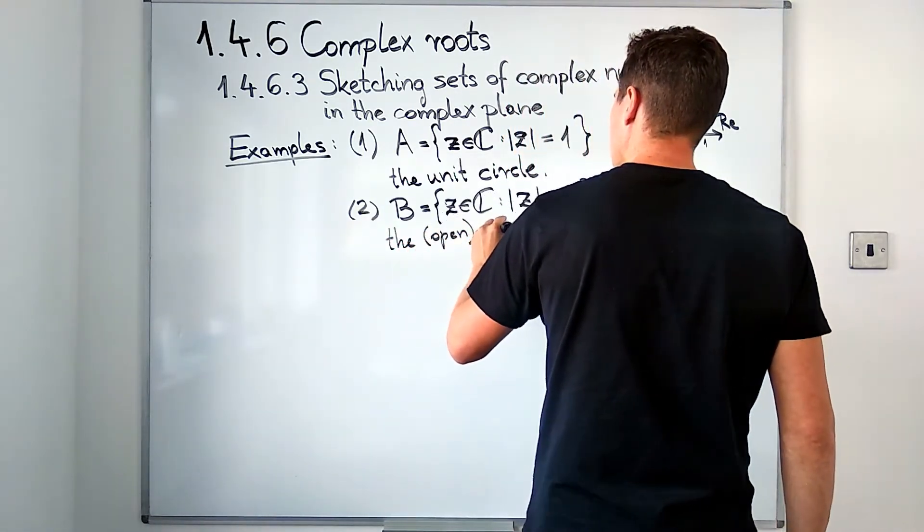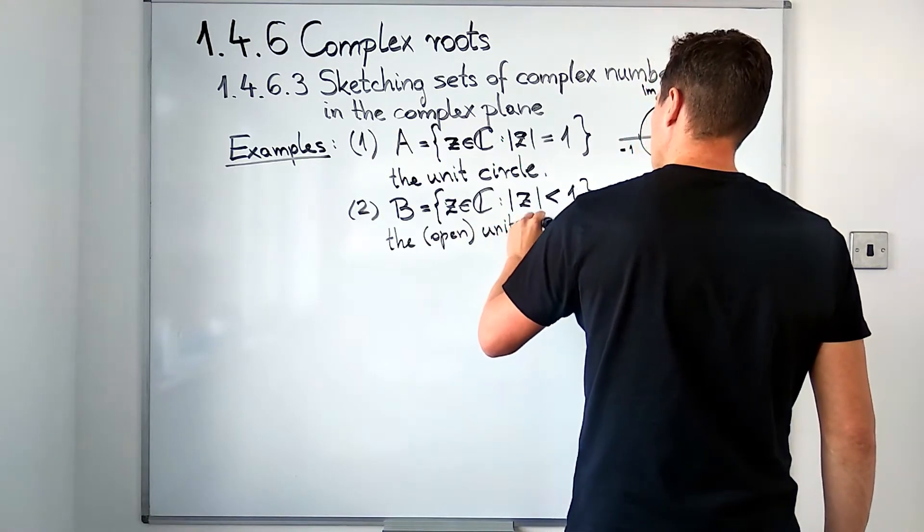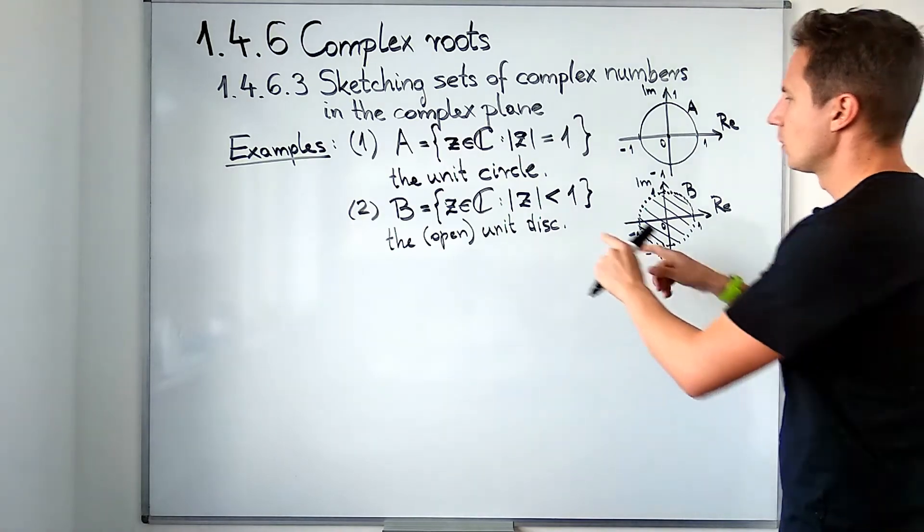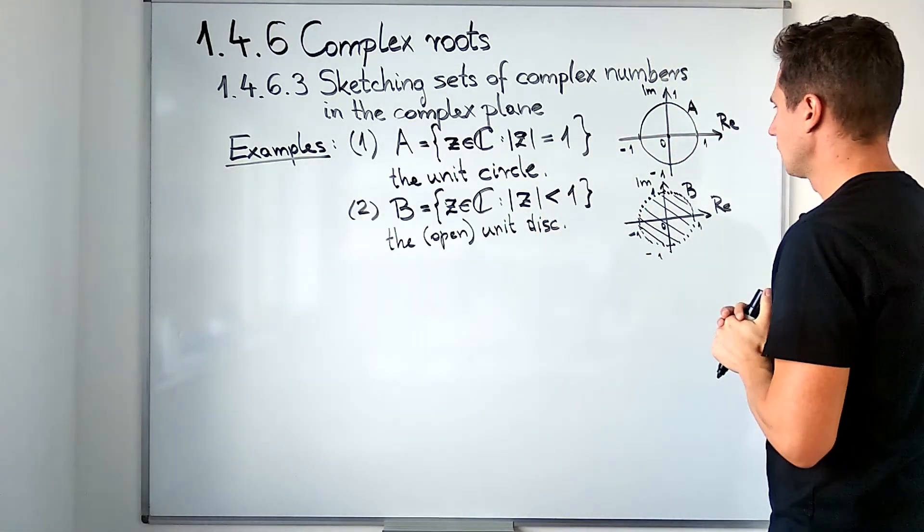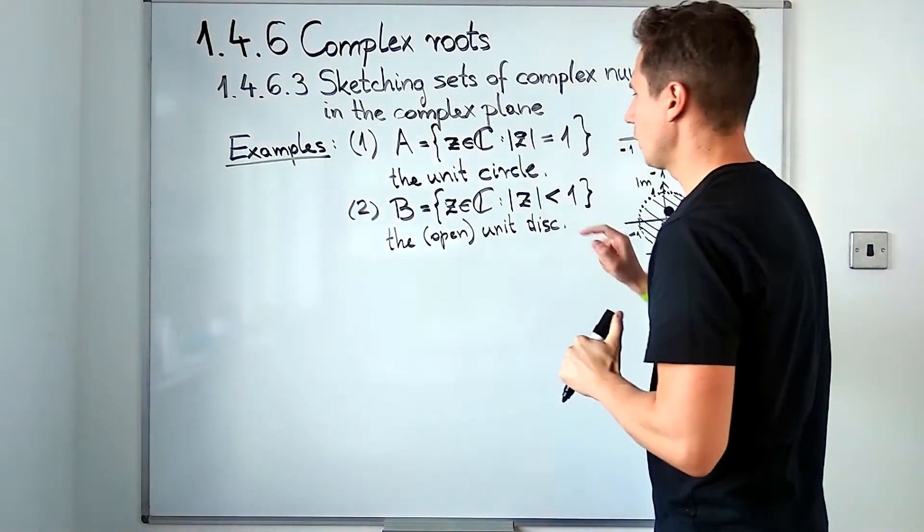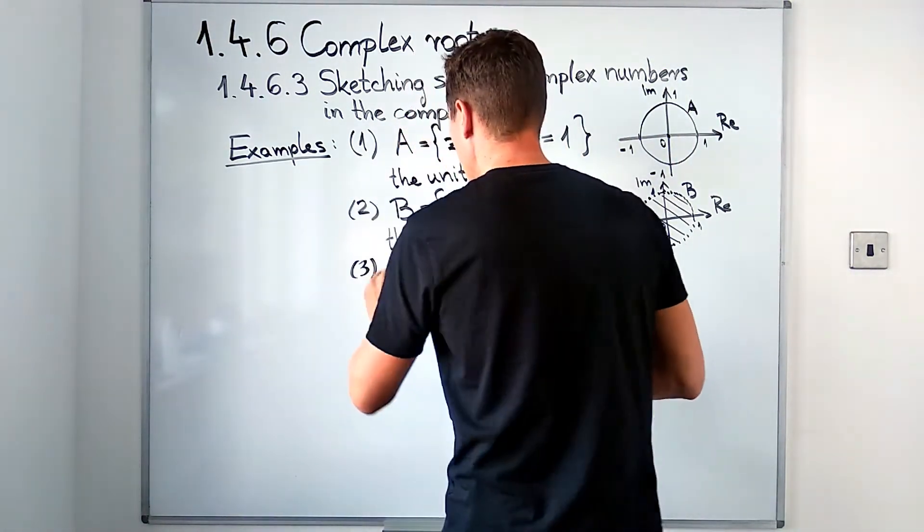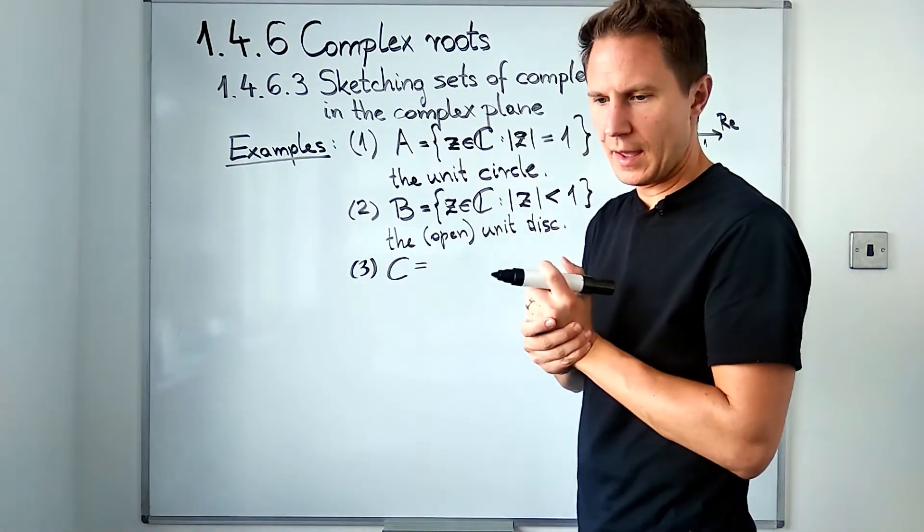That is a disk, so we call this the open unit disk. Open because the boundary of the disk is not contained in the set, so this is a strict inequality.